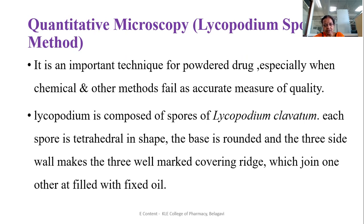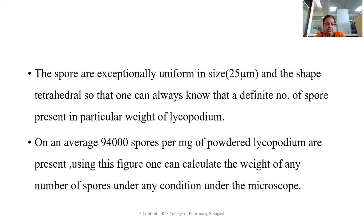Lycopodium is composed of spores of Lycopodium clavatum. Each spore is tetrahedral in shape. The base is rounded and the three side walls make three well-marked covering ridges. The spores are exceptionally uniform in size — 25 millimicrons — and tetrahedral in shape. On average, 94,000 spores per milligram of powdered lycopodium are present.